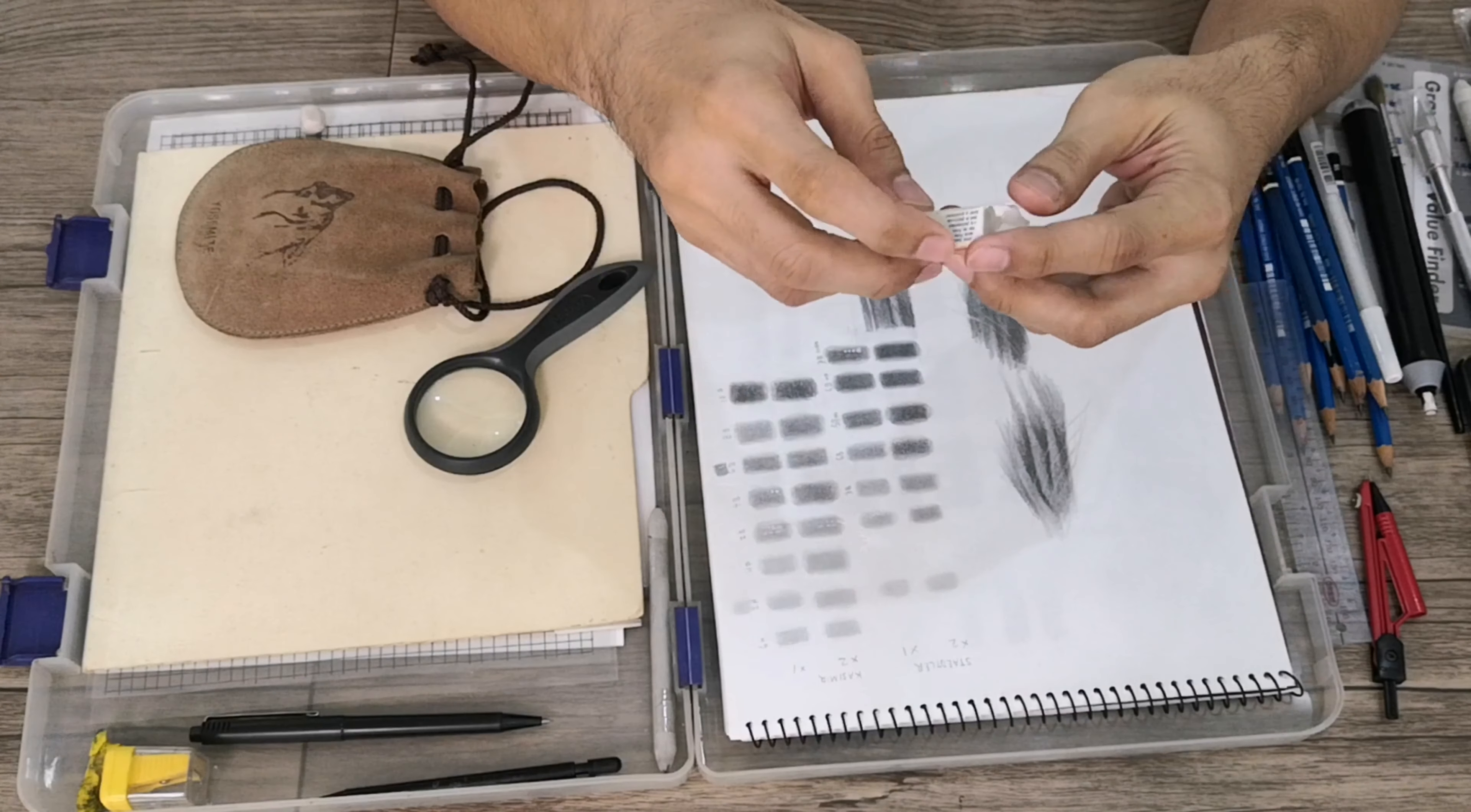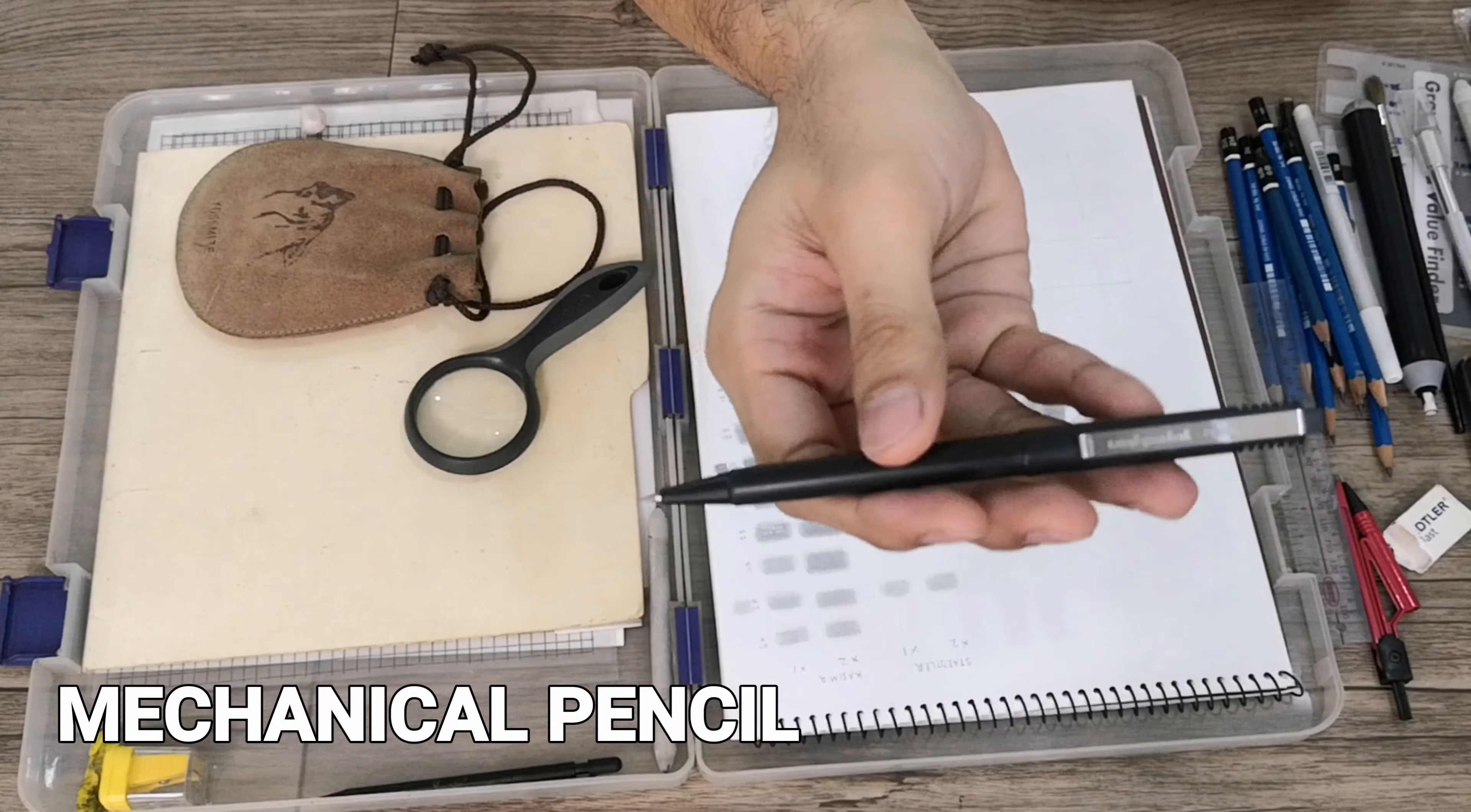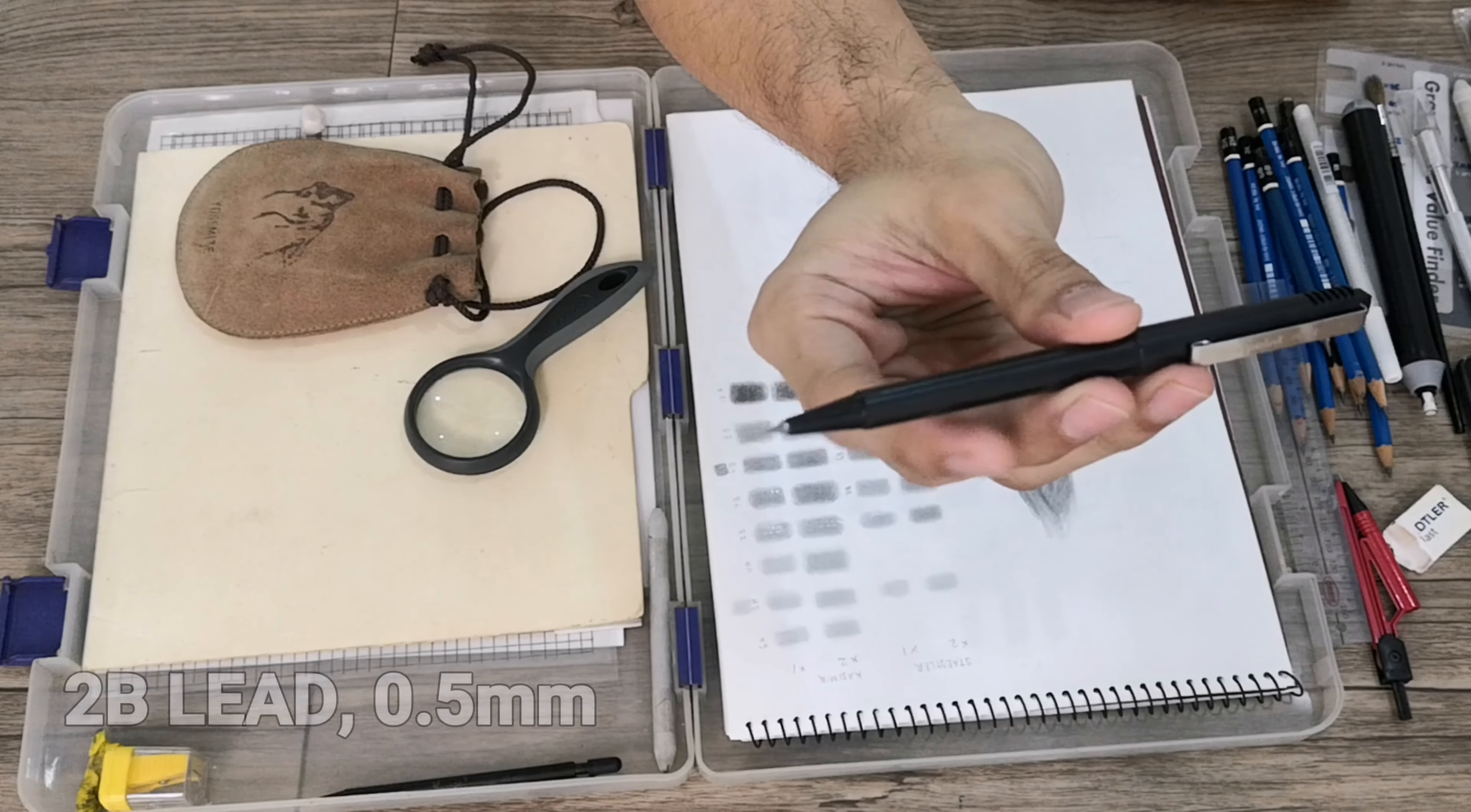So you have the regular eraser, Staedtler. I also have this mechanical pencil. This mechanical pencil, the lead used with this is a 2B type.